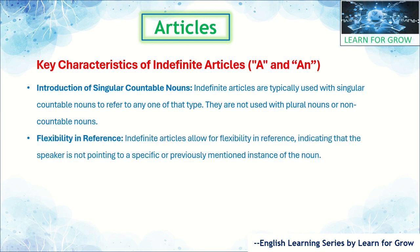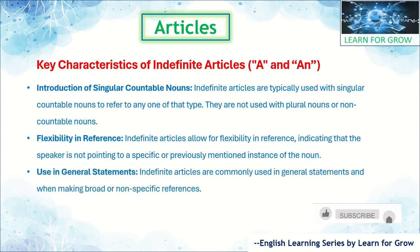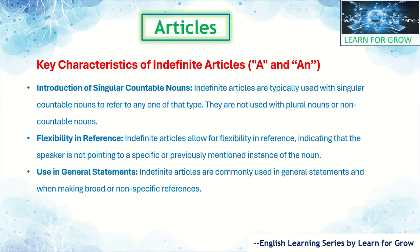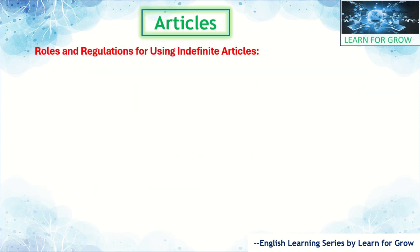The fifth characteristic is use in general statements — indefinite articles are commonly used in general statements and when making broad or non-specific references. Let's see the rules and regulations of indefinite articles. The first rule: use 'a' before words that begin with a consonant sound. For example, 'I saw a cat in the garden' — 'cat' begins with a consonant, so we use 'a.' 'She wants to buy a car' — same rule applies.